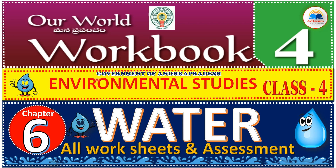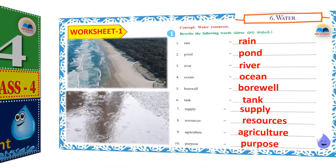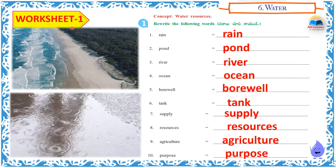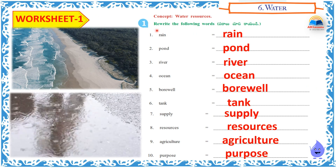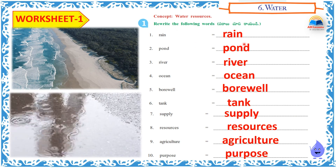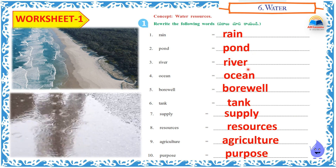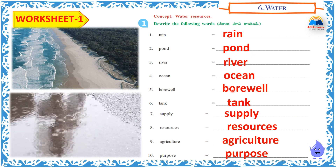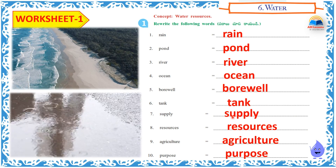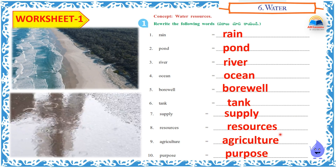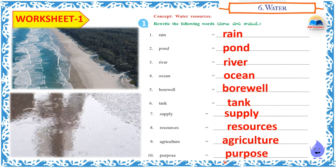Government of Andhra Pradesh Environmental Studies Class 4, Our World Workbook 4, Chapter 6: Water. All Worksheets and Assessment. Worksheet 1 Concept: Water Resource. Rewrite the following words: Rain, Pond, River, Ocean, Borewell, Tank, Supply, Resource, Resources, Agriculture, Purpose.